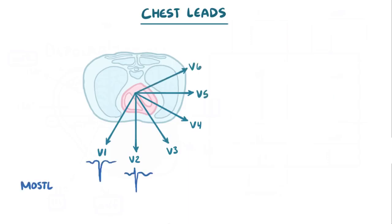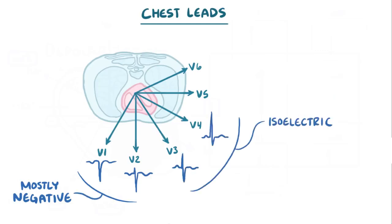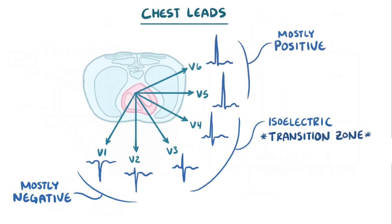Normally the QRS complex is negative in leads V1 and V2, it's isoelectric in leads V3 and V4, which is called the transition zone, and positive in leads V5 and V6.